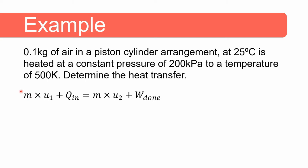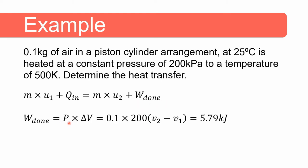We know the mass is 0.1 kilograms. We know the initial temperature and can therefore read the value of internal energy at state one from the tables. Q-in is the quantity we need to determine, and the internal energy at state two can also be read from the tables. The work performed is a constant pressure process, so we know the pressure is 200 kilopascal and we multiply that by the change in volume.